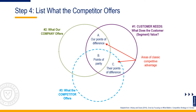The third circle represents value created by the focal competitor. It is important to use an actual alternative available to the customer and not some composite of competitors that, for example, may be best in class on all attributes. The third circle contains a comprehensive list of what the competitor offers. The three overlapping circles create seven sections.